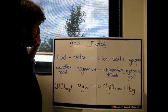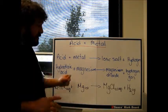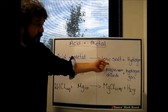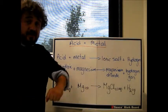When we add an acid and a metal together, every time this goes to become an ionic salt and hydrogen gas.